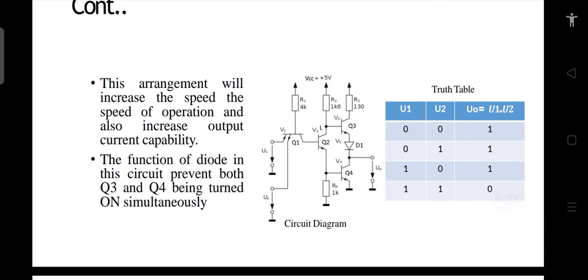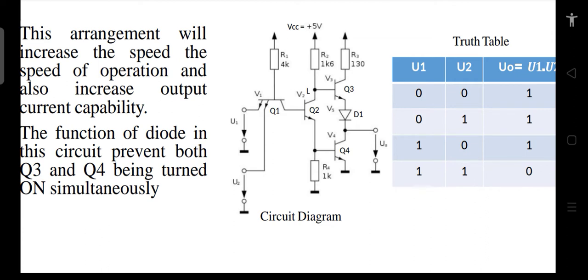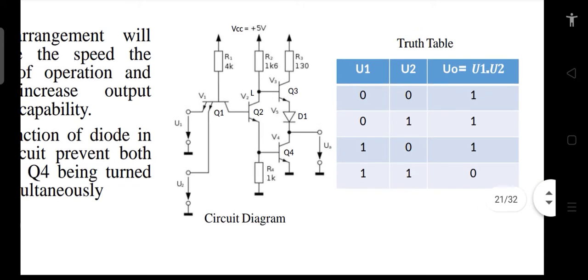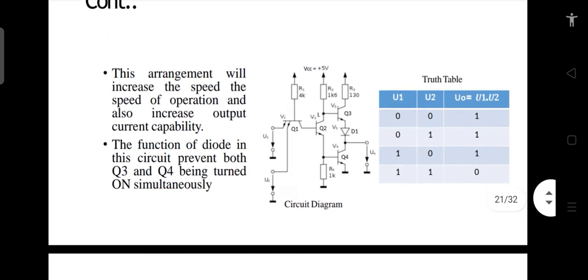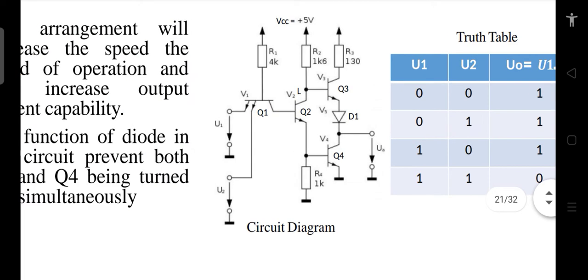We'll try to understand the working principle of the TTL circuit and why it is called the totem pole, and how you can make the other configurations from the same circuit. The basic circuit arrangement offers certain advantages — when used as a totem pole it has certain advantages, when used in open collector it offers other advantages, and when used in tri-state or high impedance mode it offers yet other advantages.